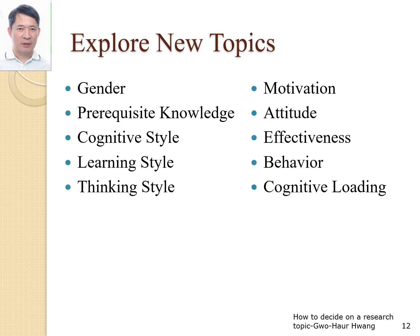Lastly, we can explore some new research topics. Learning effectiveness is a must. In addition to learning effectiveness, we can explore gender and prerequisite knowledge issues. Will gender affect learning? The answer is yes. Prerequisite knowledge, cognitive style, learning style, and thinking style will also have an impact — affecting motivation, attitude, effectiveness, behavior, or cognitive loading. In addition, there are other variables such as class participation and flow experience that we can explore.